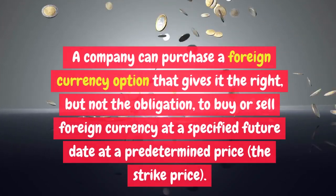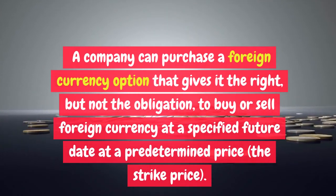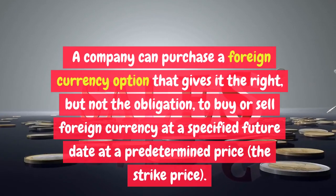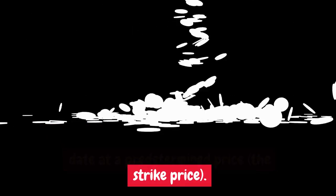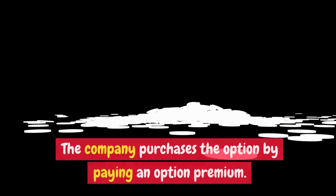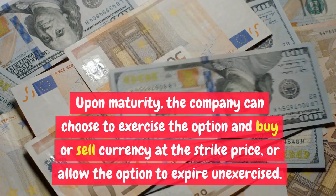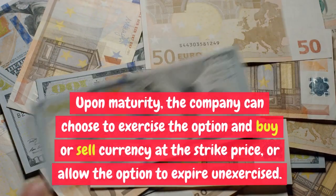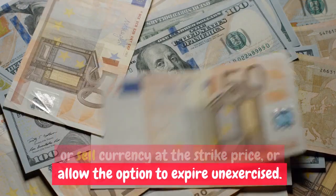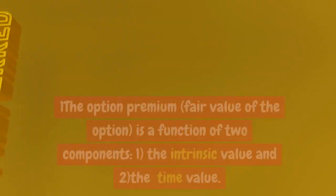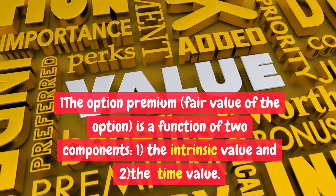A company can purchase a foreign currency option that gives it the right, but not the obligation, to buy or sell foreign currency at a specified future date at a predetermined price — the strike price. The company purchases the option by paying an option premium. Upon maturity, the company can choose to exercise the option and buy or sell currency at the strike price, or allow the option to expire unexercised. The option premium — fair value of the option — is a function of two components.